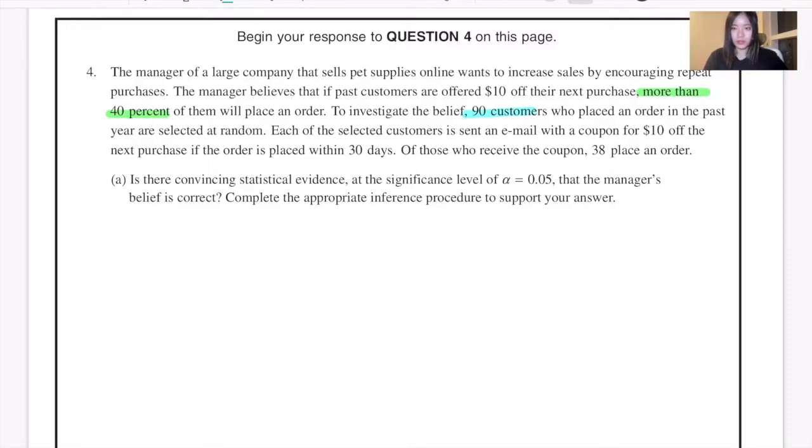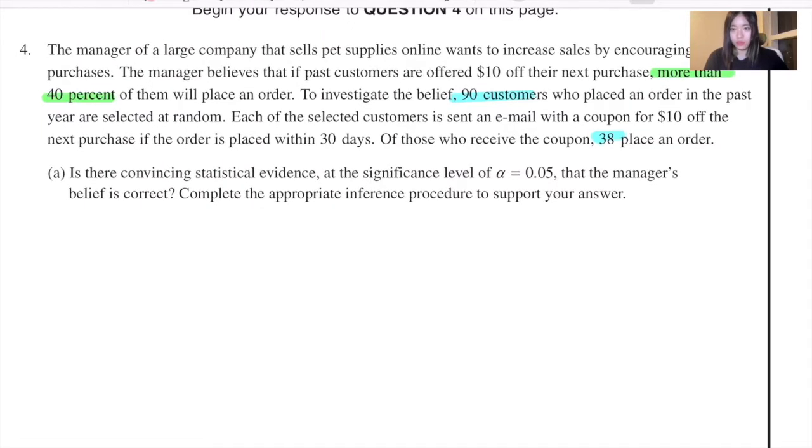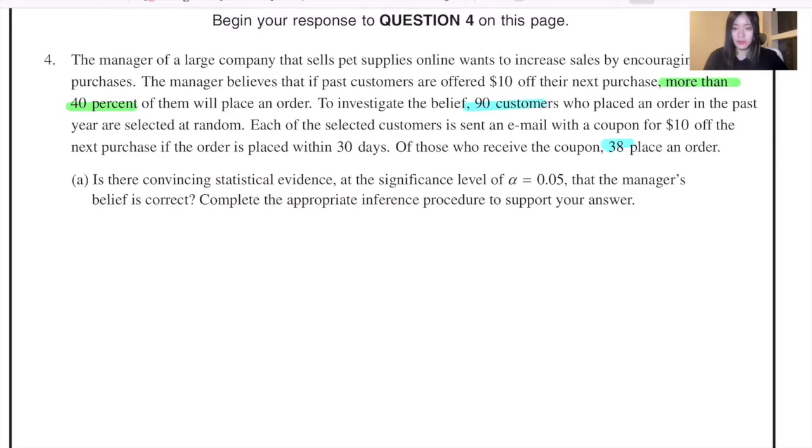Each of the selected customers is sent an email with a coupon for $10 after the next purchase if the order is placed within 30 days. Of those who received the coupon, 38 placed an order. Question A: Is there convincing statistical evidence at the significance level of alpha equals 0.05 that the manager's belief is correct? Complete the appropriate inference procedure to support your answer.